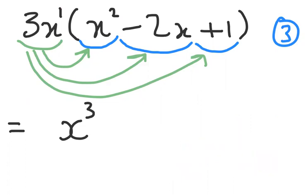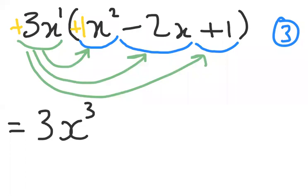Continuing with the first term, 3x multiplied by x squared: x times x squared gives x to the power three. Then for the numbers — if you don't see a number in front of x, it's an invisible one, and if there's no sign, it's an invisible plus. So plus 3 times plus 1 gives us 3. The first term is 3x cubed.